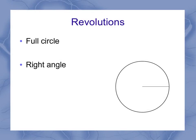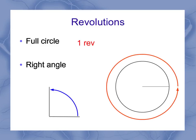And that brings us to revolutions. Revolutions is defined so that once around the circle is one revolution. And if I'm doing my right angle, which is a quarter of the way around the circle, that's 0.25 revolutions. So you could measure angles in revolutions as well as in degrees.